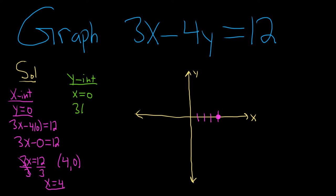This is 3 times 0 minus 4y equals 12. 3 times 0 is 0, so we have 0 minus 4y equals 12. Minus 4y equals 12.